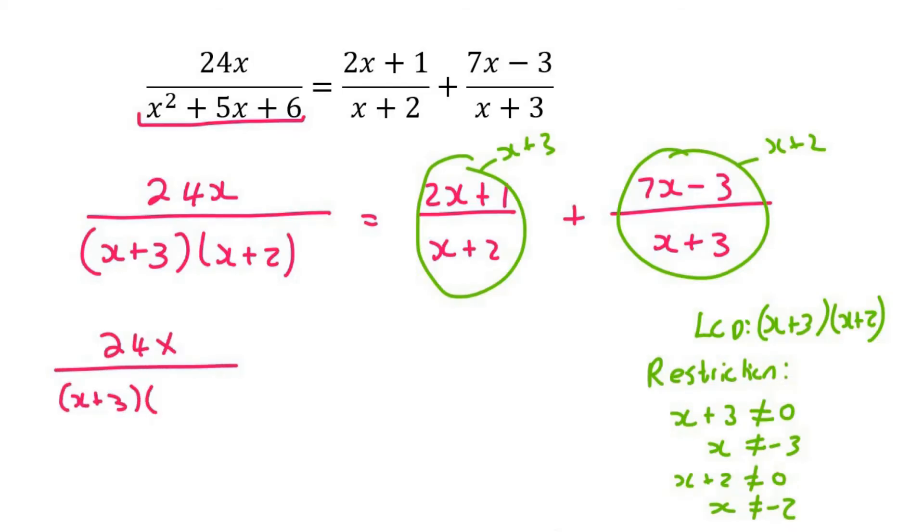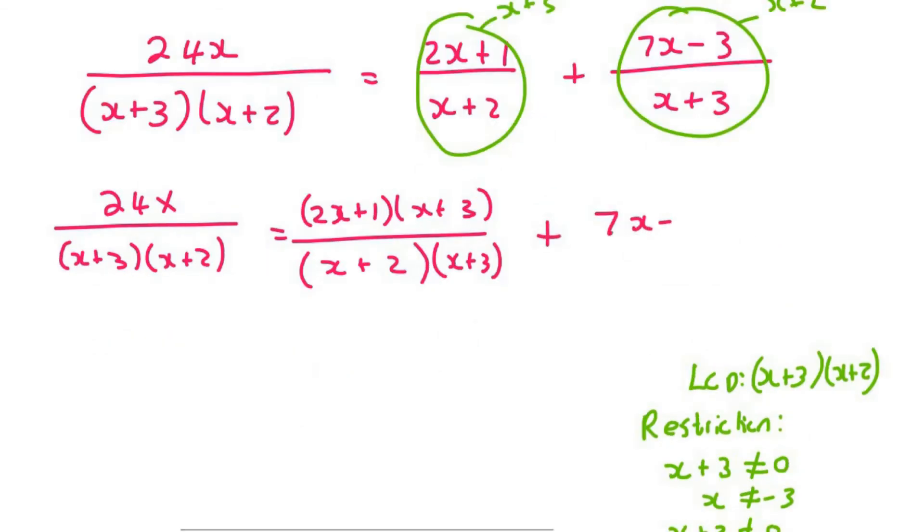equals (2x+1) multiplied by (x+3) over (x+2)(x+3), plus (7x-3) multiplied by (x+2) over (x+3)(x+2).